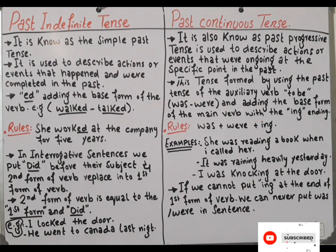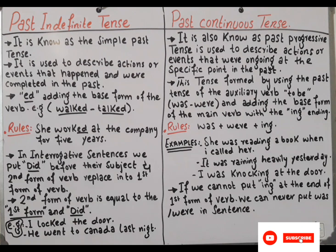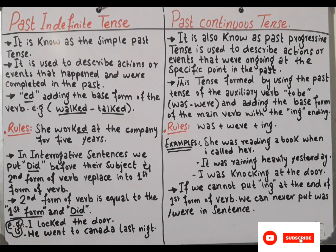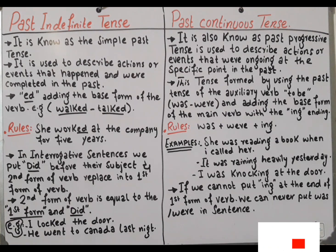Now we have the past continuous tense. What is past continuous tense? It is also known as the past progressive tense. It is used to describe an action or event that was going on at a specific point in the past. This tense is formed by using the past tense of the auxiliary verb 'to be' — 'was' or 'were' — plus the base form of the main verb with the 'ing' ending. The rule is: was/were plus verb plus ing. For example, 'She was reading a book when I called her' — here 'was' is added, 'ing' is added, and 'ed' is added in the same sentence.